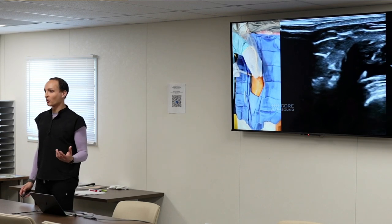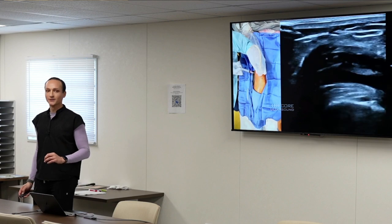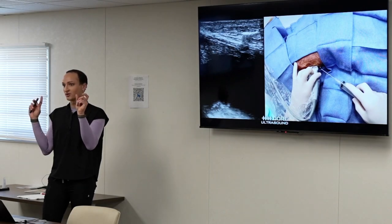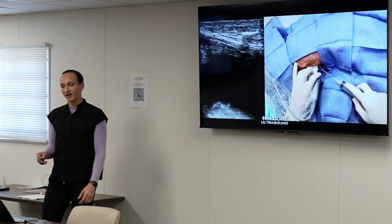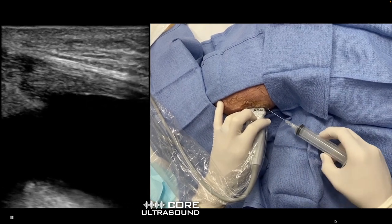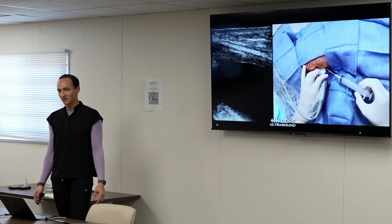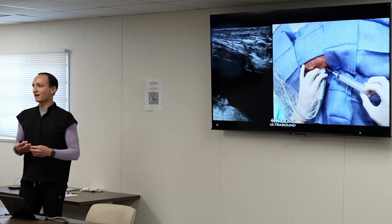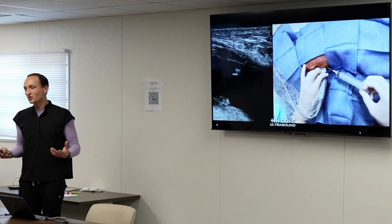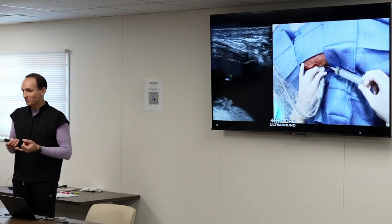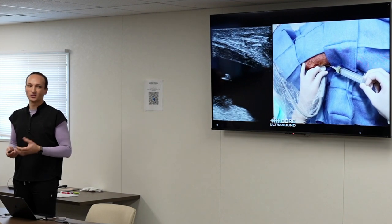Notice how much brighter the 20 gauge needle is compared to the 27 gauge in the earlier examples — much easier to see. There's a little fat in the joint to get through, which can be tricky. My technique is similar to paracentesis: poke the skin and then either lift or lower the needle hub to curve the tip toward the pocket. Even for a large effusion, ultrasound helps me go straight in without digging around.